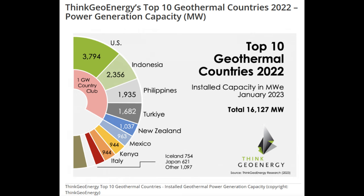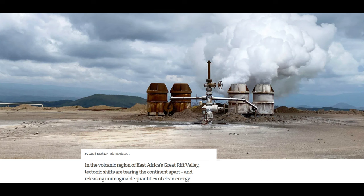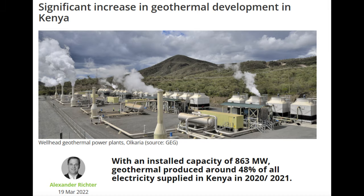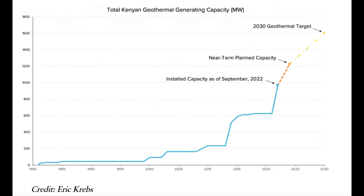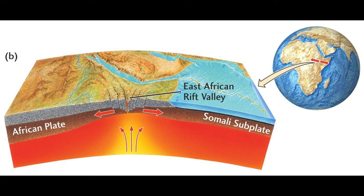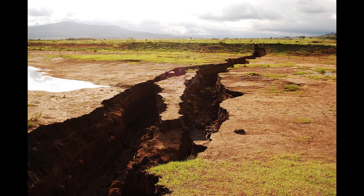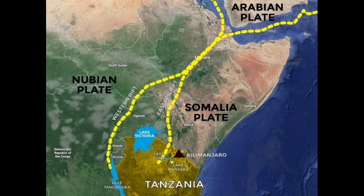Seventh in the world for geothermal production is Kenya. An impressive 48 percent of all electricity in Kenya is generated from geothermal sources — number one in the world by percentage. The main geothermal field is only 44 miles (about 71 kilometers) north of Nairobi, the capital and largest city. Part of Kenya is located along the East African Rift Valley — an area with a lot of seismic uplift and separating plates, with visible cracks opening in the earth. Essentially any place along this rift valley in Africa has potential for geothermal energy.